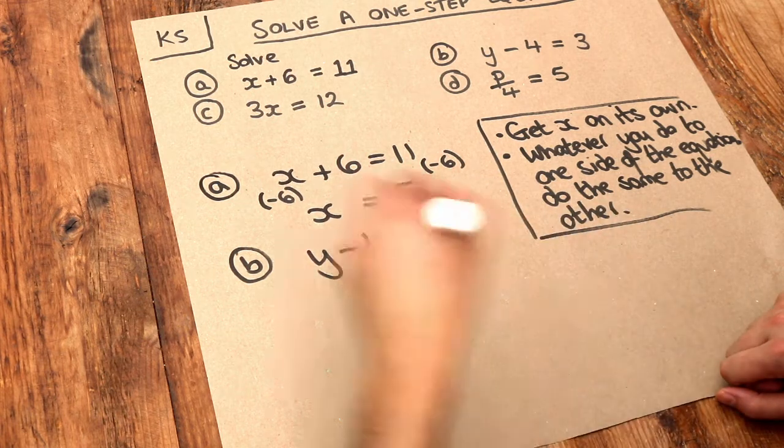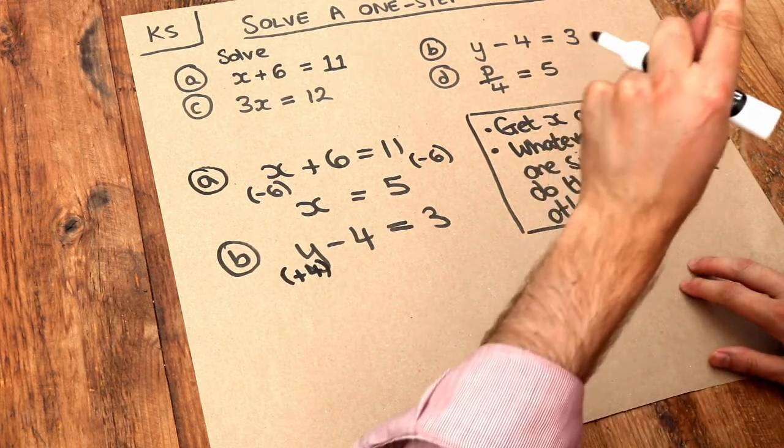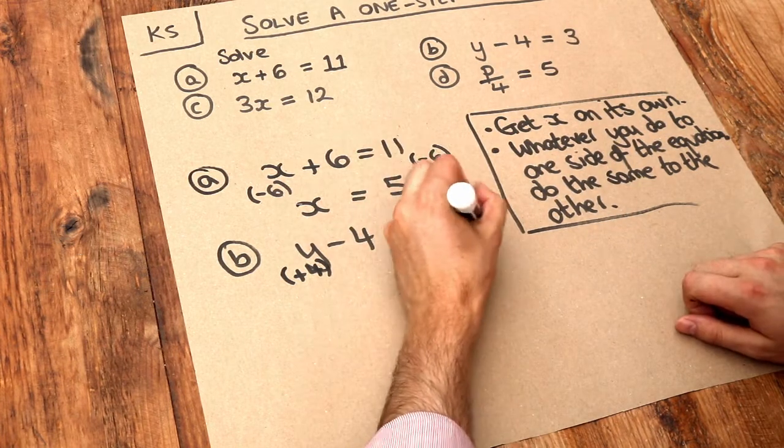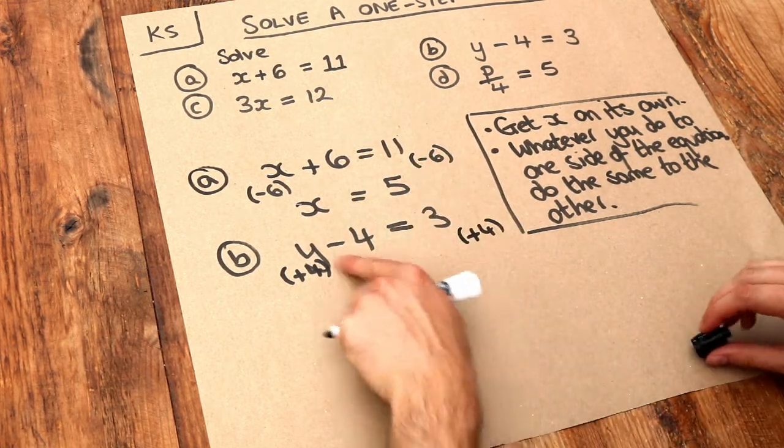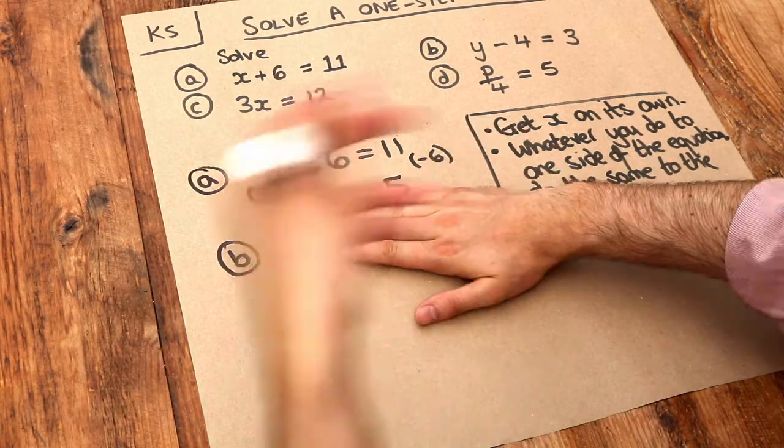The opposite of subtracting 4 is adding 4. So I'm going to add 4 to the left-hand side of the equation. But whatever I do to the left side, I have to do the same to the right to balance it out. So we add 4 to this as well. When we add 4 to the left-hand side, it cancels out the minus 4, because minus 4 plus 4 is just 0.